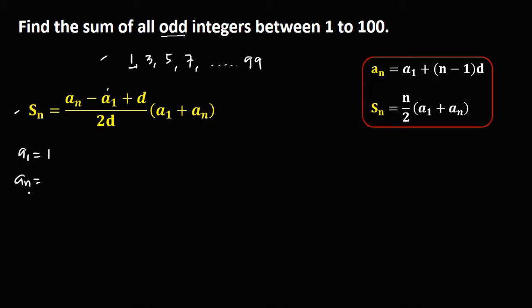Then a sub n is the last term. And since the last term is 99, therefore a sub n is 99.